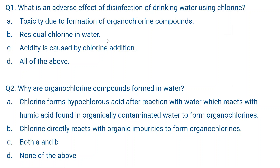Option B: Residual chlorine in water — when disinfection of water reaches the glass, residual chlorine is around 0.2 ppm and it can be harmful. Option C: Acidity is caused by chlorine addition. When you add chlorine, hypochlorous acid is formed, which reduces the pH of water. So all of them are correct, and the correct answer is D.